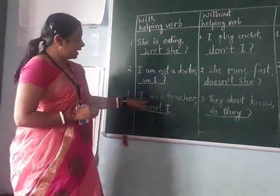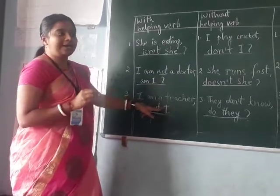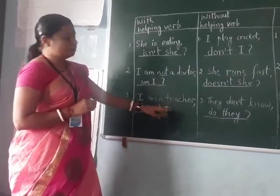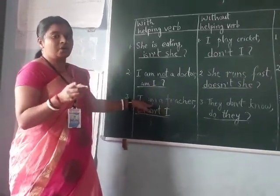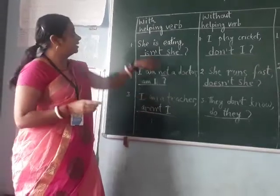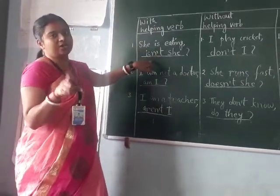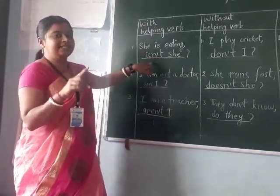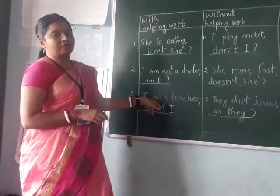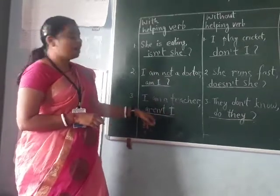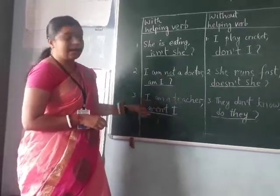The third one is 'I am a teacher.' In the answer it should be 'am not.' Like it was 'is,' the answer was 'is not' — the short form is 'isn't.' In that way, 'am not' short form is 'aren't.' So the answer will be 'aren't I?' And the question mark is very important.